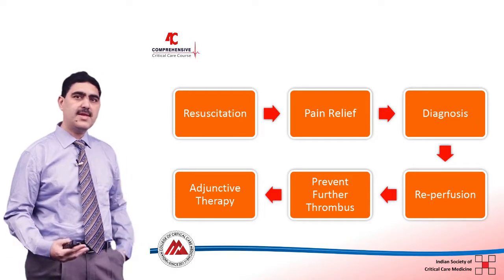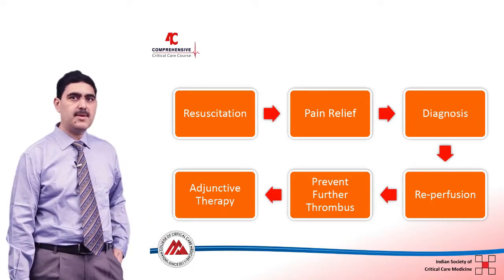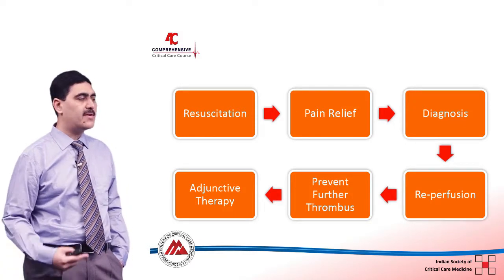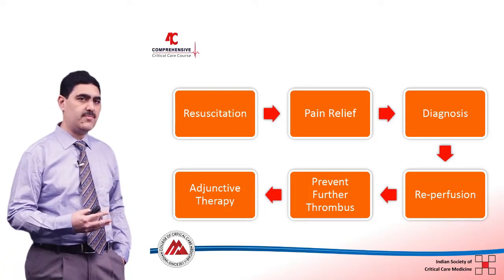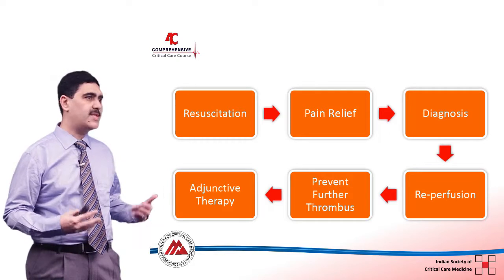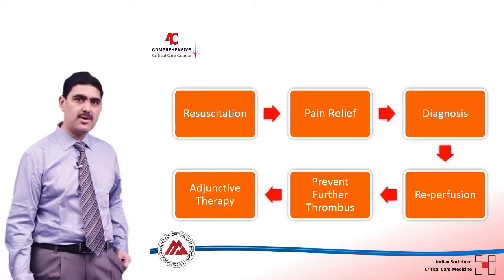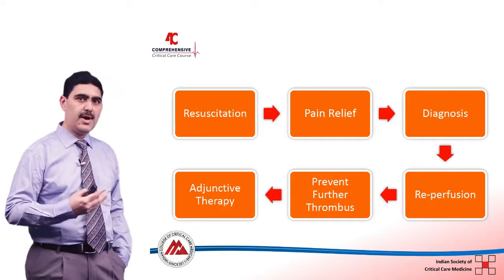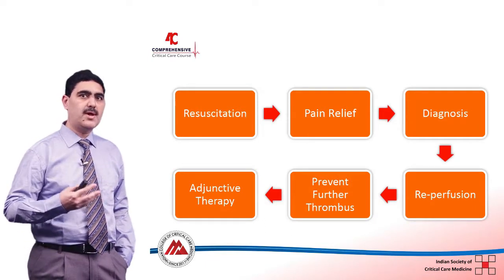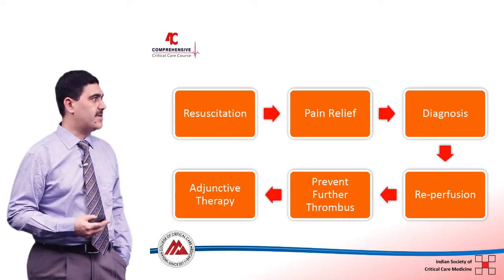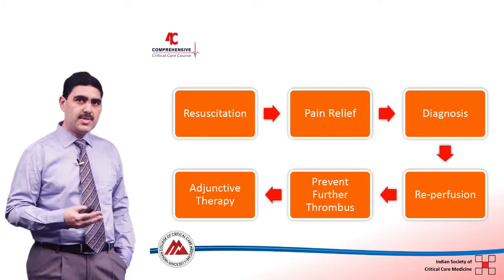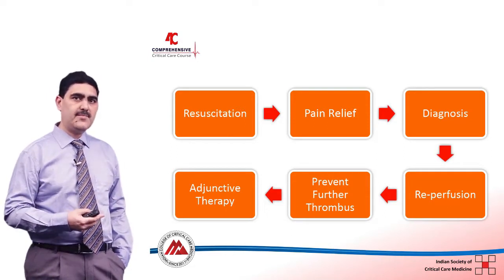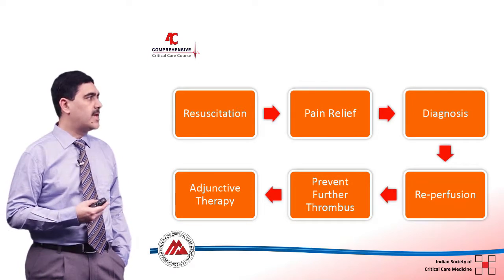Whenever a patient presents with chest pain, as with anything else in the emergency department or critical care department, our first goal is resuscitation. We think of airway, breathing, and circulation at all times, and we want to primarily resuscitate the patient to ensure that life is saved. Subsequent to that, our secondary goal — particularly in patients presenting with acute coronary syndrome — is pain relief.